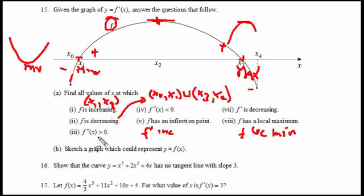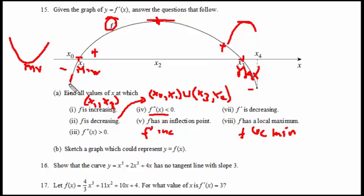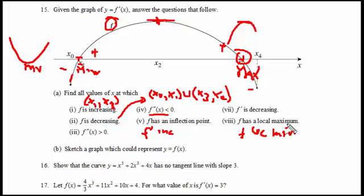f prime is greater than 0 from x0 to x2 — that's what we observed. f prime is increasing means f double prime is greater than 0 from x0 to x2, and f double prime is less than 0 from x2 to x4. f has an inflection point at x2. f prime is increasing from x0 to x2 — that's Roman numeral 6. f prime is decreasing from x2 to x4 — that's number 7. f has a local maximum at x3, and f has a local minimum at x1. That completes the answers for problem 15.